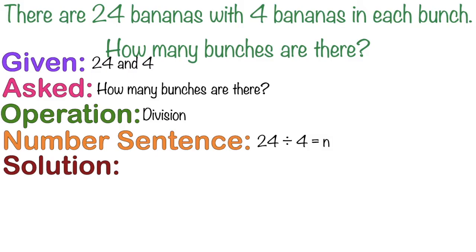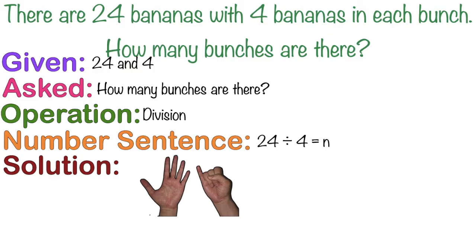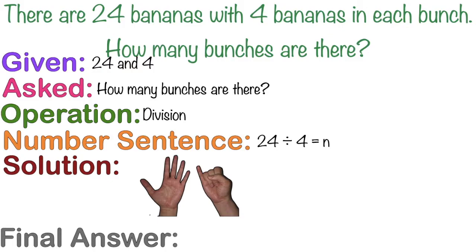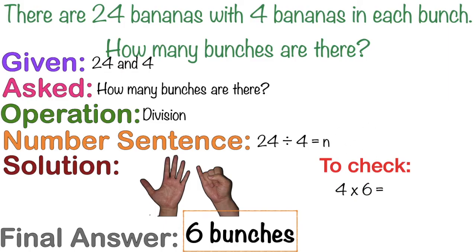Let's have the solution. Again, children, any solution will do. Let's skip count by 4 until we reach 24. Let's do it together: 4, 8, 12, 16, 20, 24. So the final answer is 6 bunches. To check our answer, simply multiply the divisor and the quotient: 4 times 6 equals 24. Since our product and dividend are both 24, that means our answer is correct.